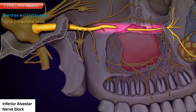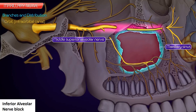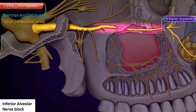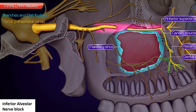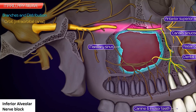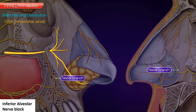In the orbit or the infraorbital canal: the middle superior alveolar nerve passes downwards and forwards along the lateral wall of the maxillary sinus, joins the superior dental plexus, and supplies the premolar teeth. The anterior superior alveolar nerve runs in the anterior wall of the maxillary sinus through a bony canal called canalis sinus and divides into dental and nasal branches. The dental branches join the superior dental plexus and supply the canine and incisor teeth. The nasal branches appear in the lateral wall of the inferior meatus and supply the mucous membrane of the lateral wall and floor of the nasal cavity.